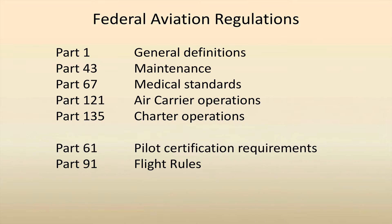The FARs are divided into parts. Part 1 is all about the general definitions. Part 43 specifically tackles maintenance, and in there you'll also find what preventative maintenance is and what private pilots can do on their airplanes. Part 67 is the medical standards. Part 121 is air carrier operations. 135 is charter — we're really not dealing with those at all. But Part 61, which is all about certification requirements, and Part 91, which is the flight rules — those will be the two major areas we'll look at in this session.